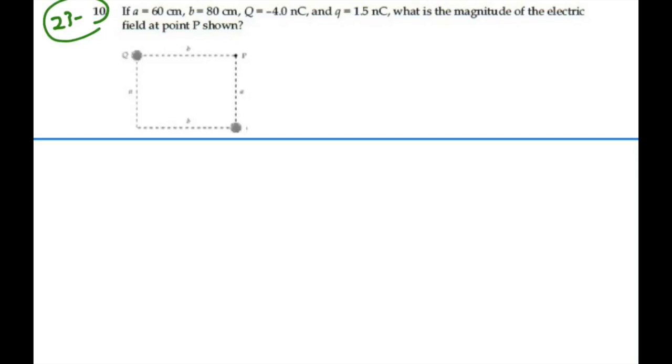Let's take a look at this situation. We have Q over here equal to minus 4 nanocoulombs. We have little q over here equal to 1.5 nanocoulombs. So big Q is a negative charge, and little q is a positive charge.